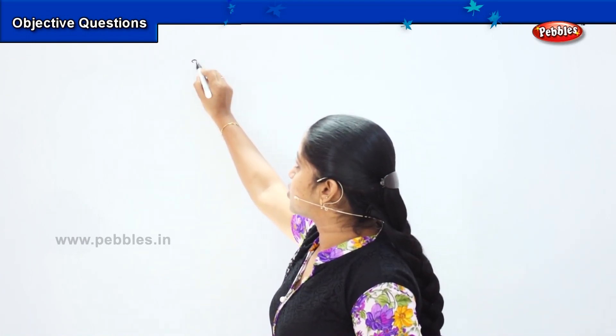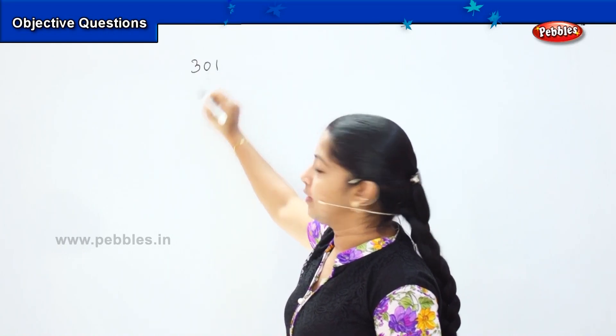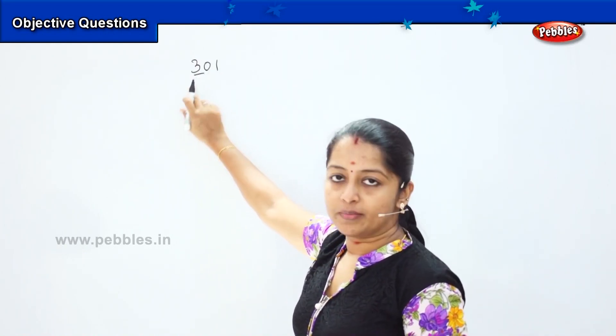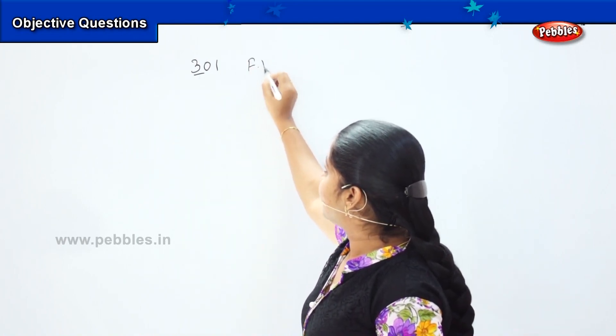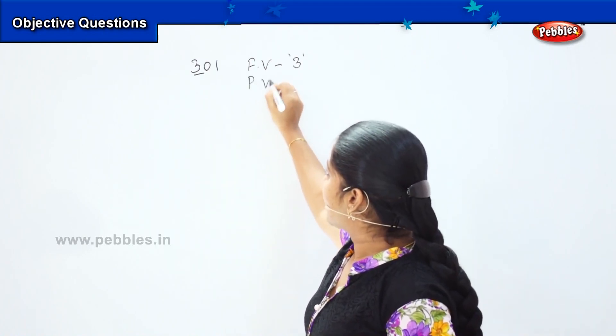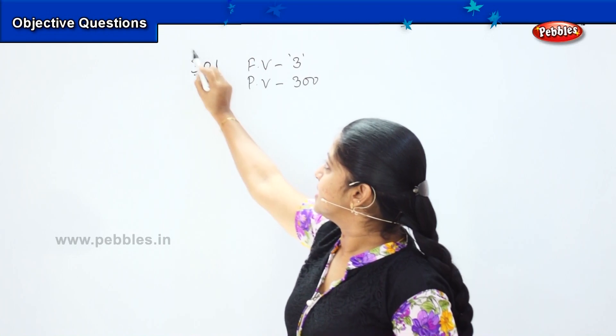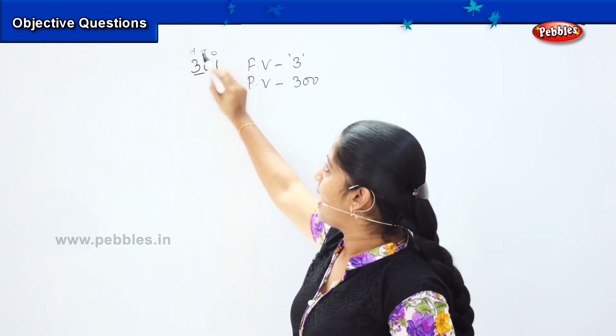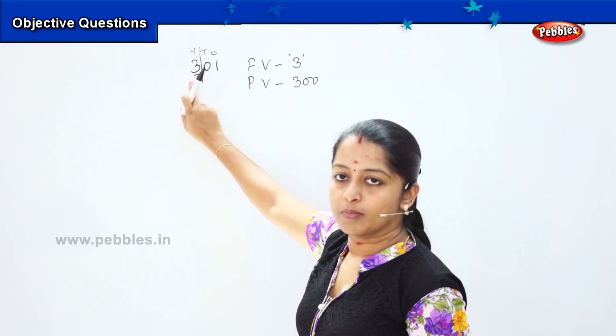Now children, we have the next pattern of questions which will focus on place value and face value. If you remember, I told you earlier that face value is the value of the digit which it actually carries. For example, if I give the number as 301, my face value of 3 will remain the same — it will remain as 3. It will not change. Whereas my place value will be 100 because it is H, T, O and 3 comes in the column of H.